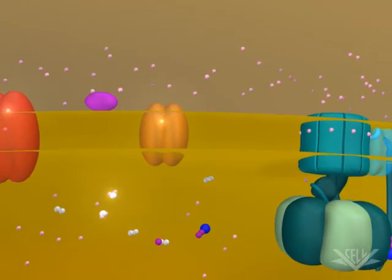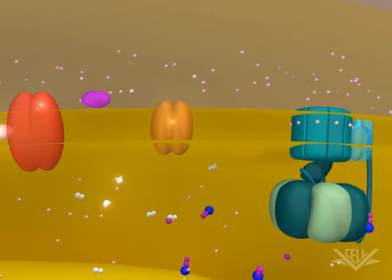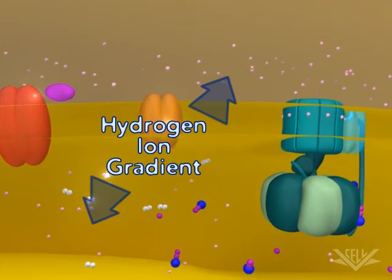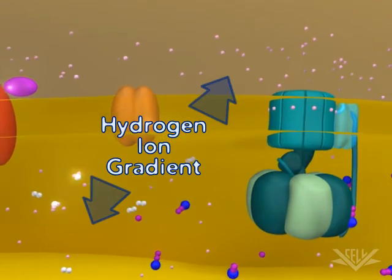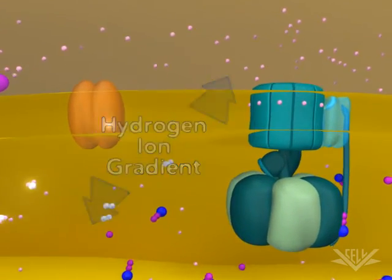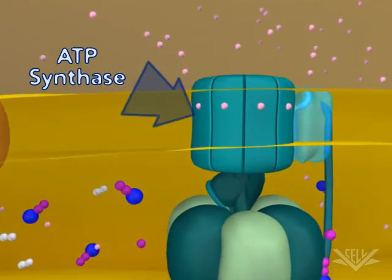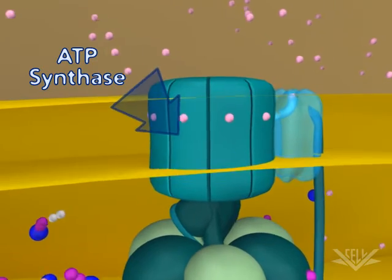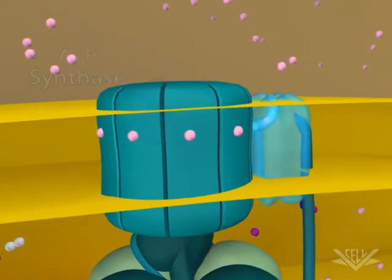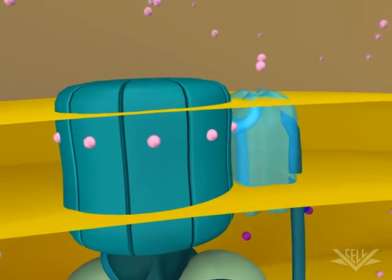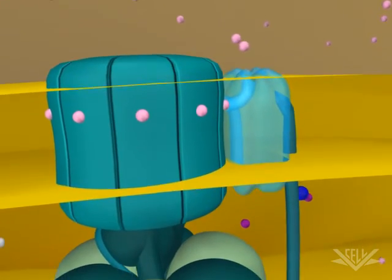This series of hydrogen pumping steps creates a gradient. The potential energy in this gradient is used by ATP synthase to make ATP from ADP and inorganic phosphate.